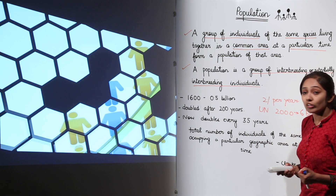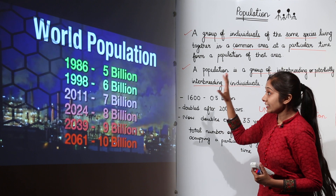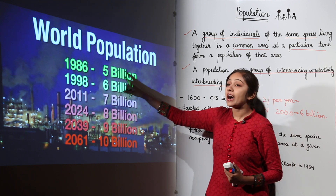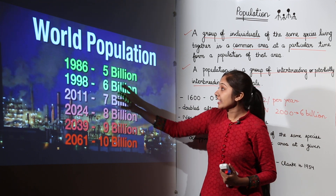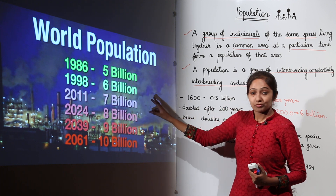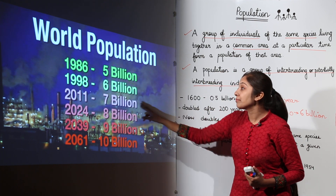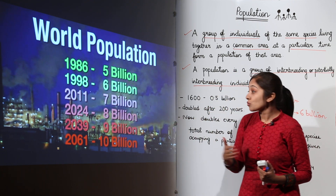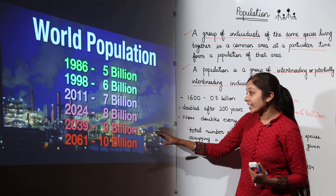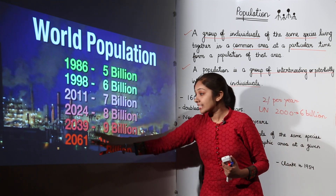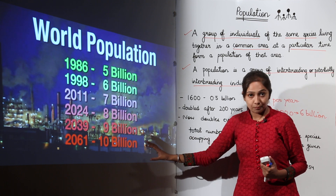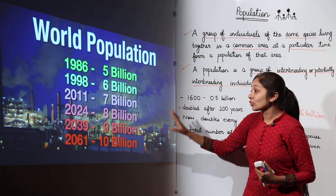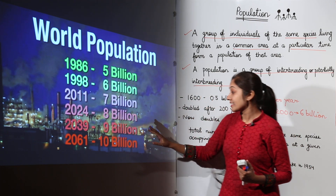Here is some important data: in 1986 the world population was 5 billion; in 1998 it was 6 billion; in 2011 it was 7 billion; in 2024 it is expected to be 8 billion; then 9 billion; and by 2061 it is projected to reach 10 billion.